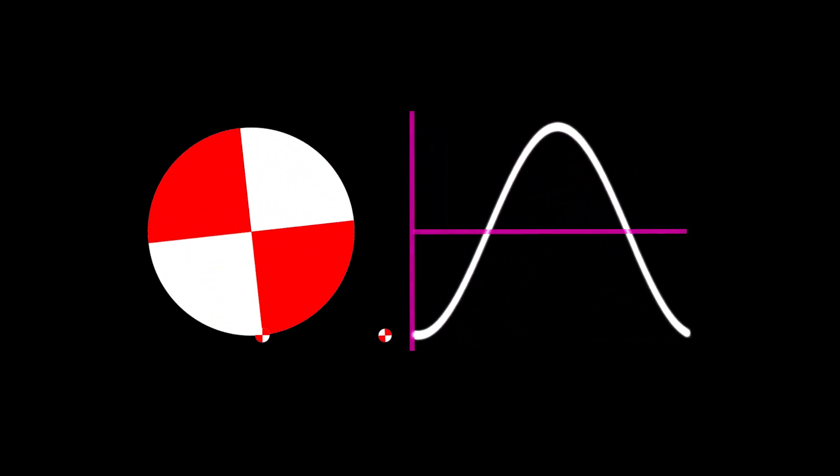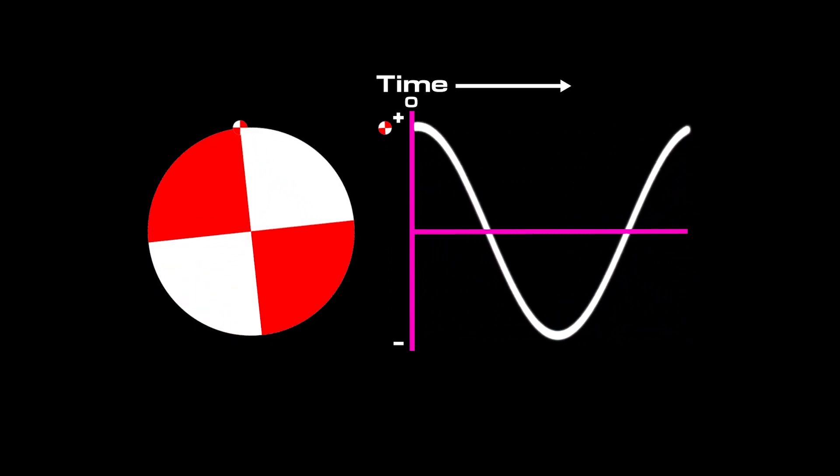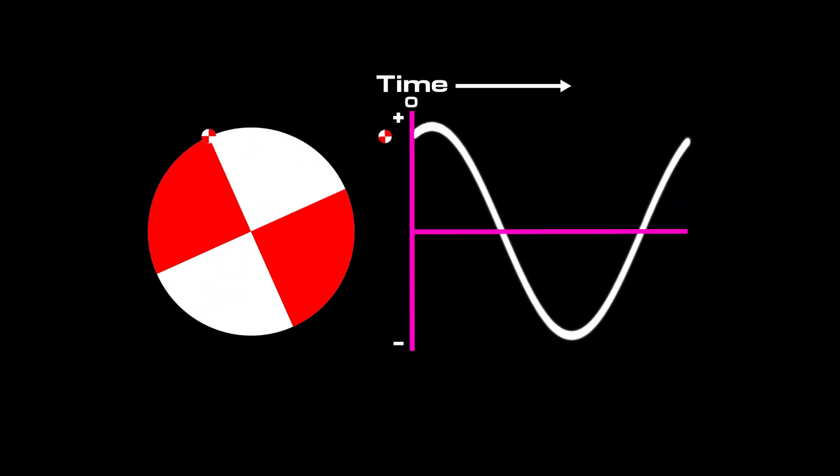If we consider our sinusoid in time, we end up with a graph like this, with positive peaks in the positive side and troughs in the negative. And of course, the zero crossing when the amplitude of the wave is zero. These graphs could also be in distance as well, but we will only be interested in time for this video.